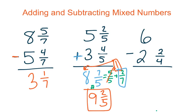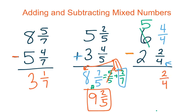Go ahead and solve the next problem: 6 minus 2 and 2 fourths. Before we can subtract we have to borrow from our whole because there is no fraction. When adding and subtracting fractions there always needs to be a fraction to work with. So I borrow from my whole, which becomes 5, and I look at the denominator of the other fraction — it's 4 — so one whole equals 4 fourths. Now I can subtract: 4 fourths minus 2 fourths gives me 2 fourths, and 5 minus 2 gives me 3. That's my final answer.